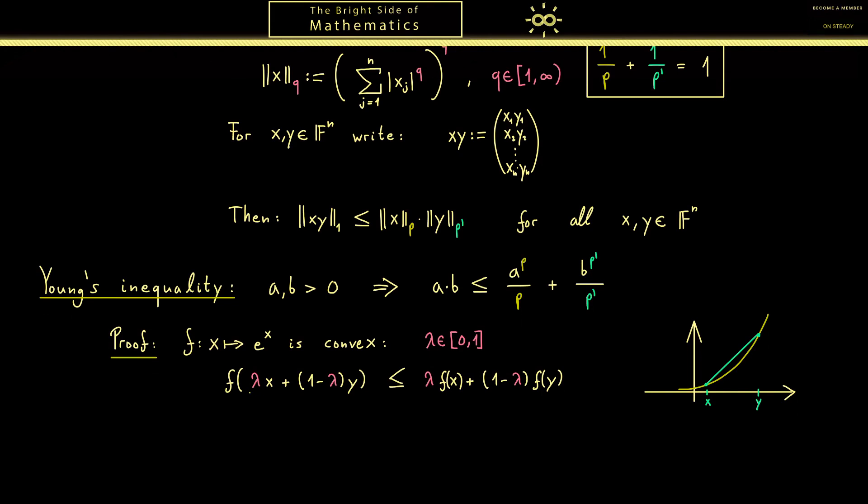Lambda should be 1 over p, and then 1 minus lambda should be 1 over p'. Maybe that's not so clear, but for x I want to put in the natural logarithm of a to the power p, and the similar thing for y but now with b and p'. Of course this all fits together because by applying the logarithm rules we can bring this power in front where it cancels out.